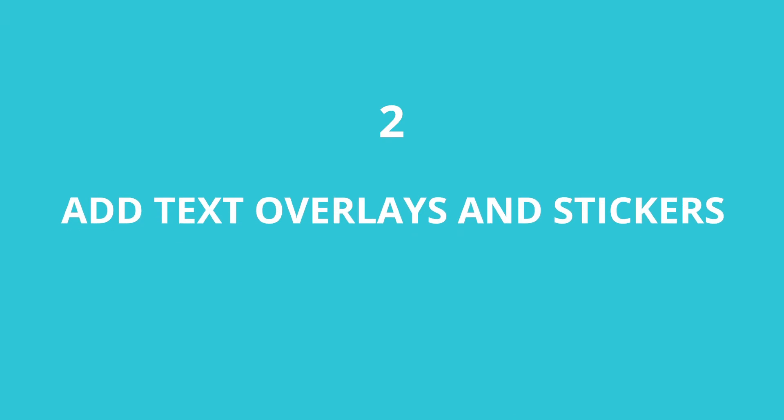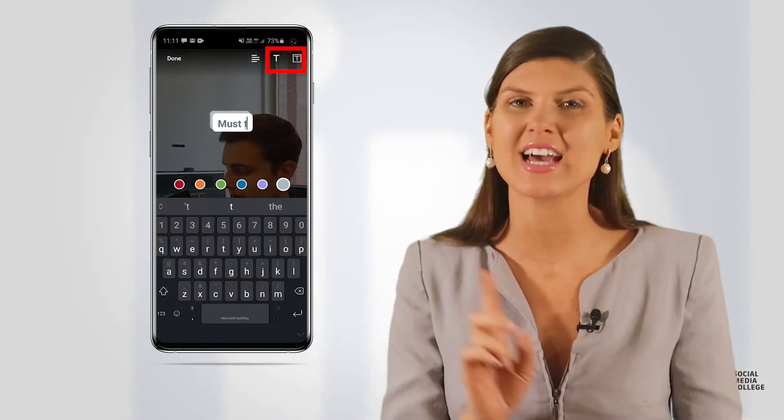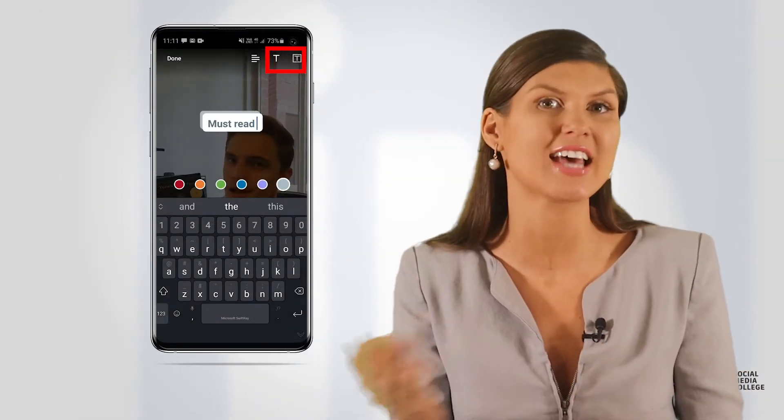Step number two: add text overlays and stickers. To do this, click on the edit buttons on the top right-hand side of your screen. You can mix it up with text, hashtags, stickers, and more. The best way to learn about these features is to jump in and give it a go yourself.